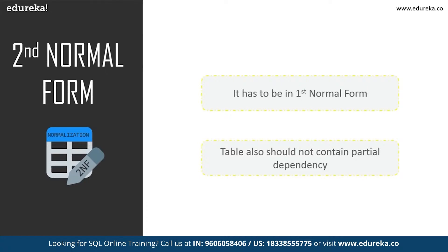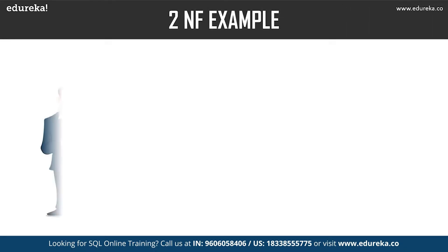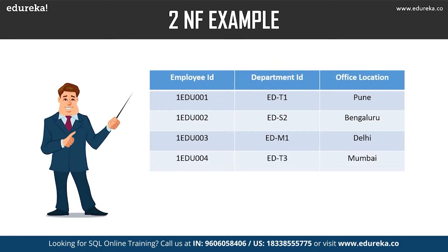Partial dependency means a proper subset of a candidate key determines a non-prime attribute. Attributes that form a candidate key are called prime attributes, and the rest are non-prime attributes. For example, prime attributes can be employee ID and department ID, while a non-prime attribute can be office location. In the given table with a composite primary key of employee ID and department ID, the non-key attribute office location depends only on department ID — just part of the primary key — so this table does not satisfy second normal form.